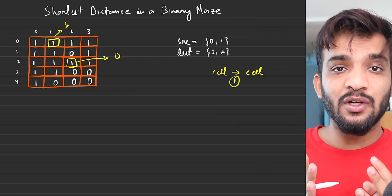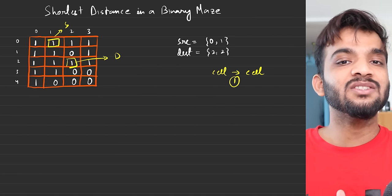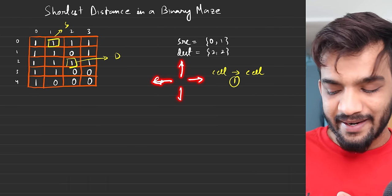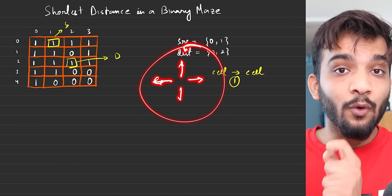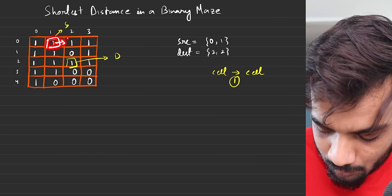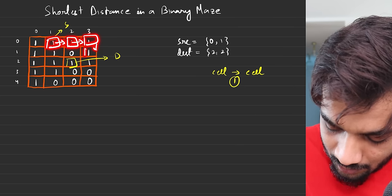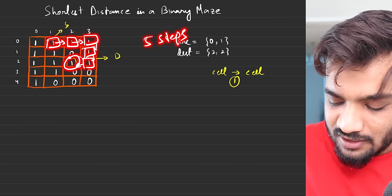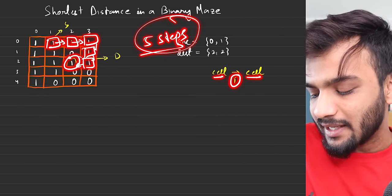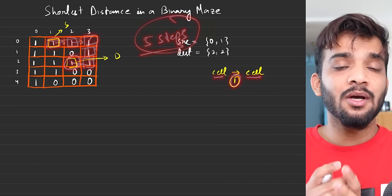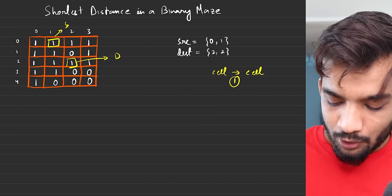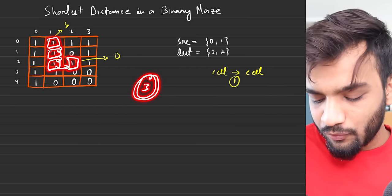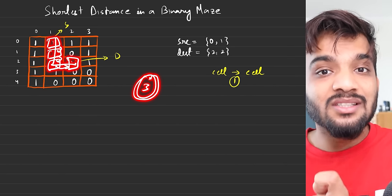You can only move in four directions. Assume you're standing at the source. You can move right, then down, then down, then right — which takes five steps. But is that the shortest? No. You can also move in a different direction: one, two, three. So moving that way gives you the shortest distance of three.